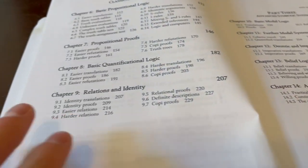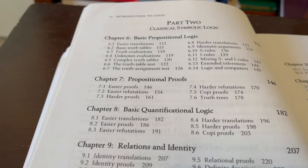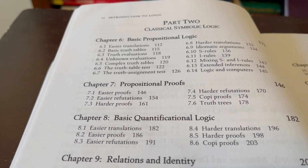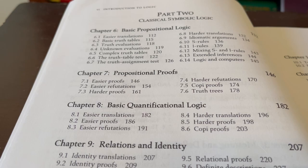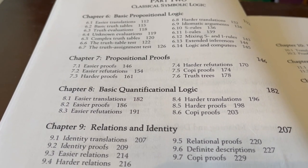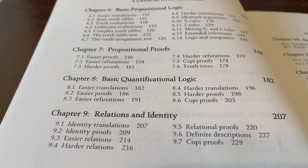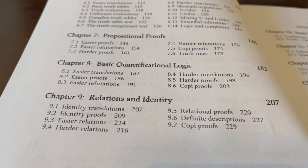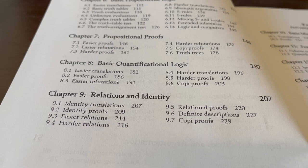Part two is on classic symbolic logic. Chapter six, basic propositional logic. Chapter seven, propositional proofs. Chapter eight gets into predicate logic. Here we have basic quantificational logic. And predicate logic is continued with chapter nine, relations and identities, where we get into relational proofs and definite descriptions and so forth.